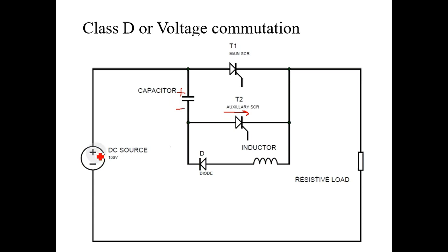And it will get charged to the DC source voltage. Once capacitor gets charged, it will once again get open circuited and current stops flowing through capacitor, auxiliary SCR, and through resistive load.